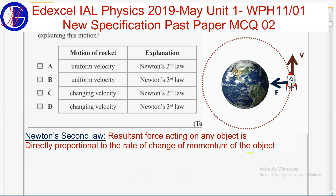Momentum of an object is defined as the product of mass and velocity. Therefore, if the velocity of an object changes, momentum also changes.